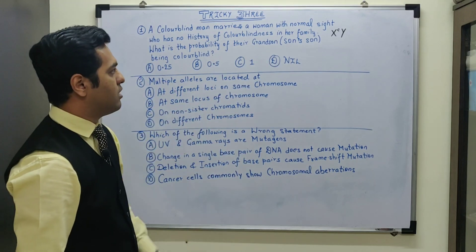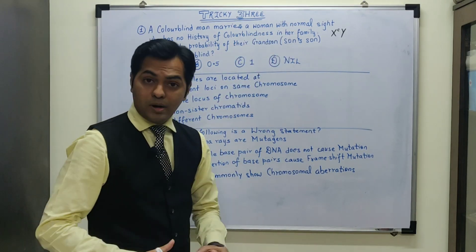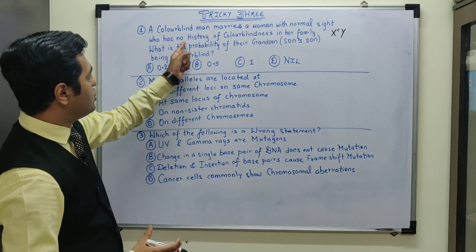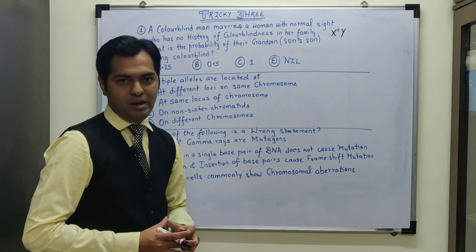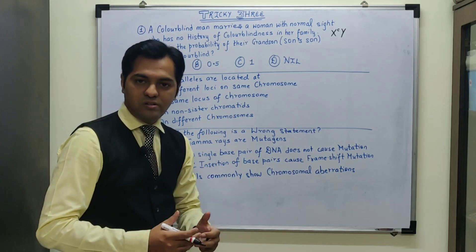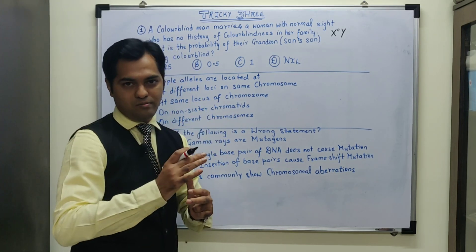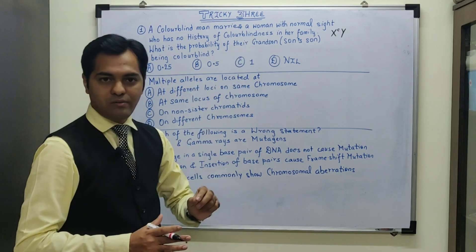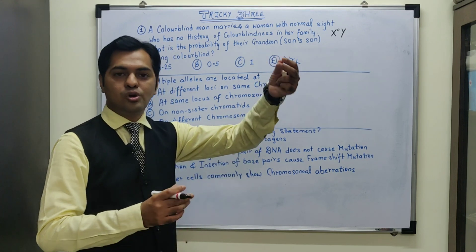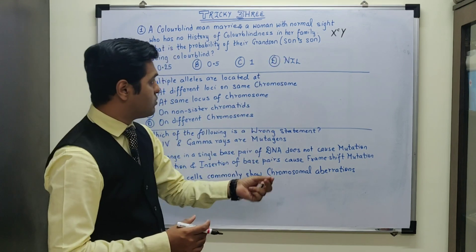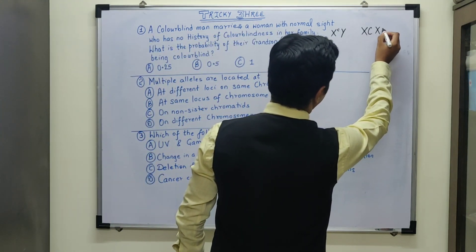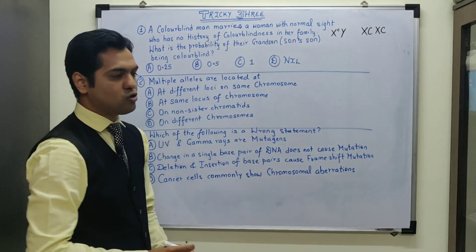So the man is definitely colorblind. The woman has normal sight, but she could be a carrier as well. However, it's mentioned that she has no history of colorblindness in her family. That means the woman has definitely not received the defective gene from her father because there is no history of colorblindness. As we are aware, X-linked shows crisscross inheritance. So from her father, she could have received the recessive gene, but since there is no history of colorblindness, the female has the dominant gene capital C. So both the X chromosomes are normal.